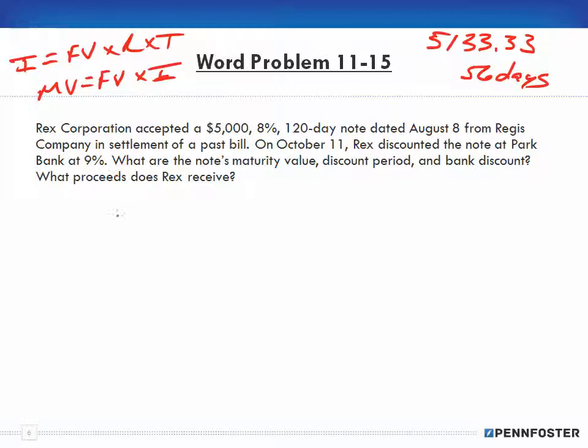Now we need to figure out our bank discount. We're going to take 5,133.33, and that's being discounted at 9%, so that's 0.09, and that was for 56 days over 360. We do the math again: 5,133.33 times 0.09 times 56 gives me 25,871.98 over 360.